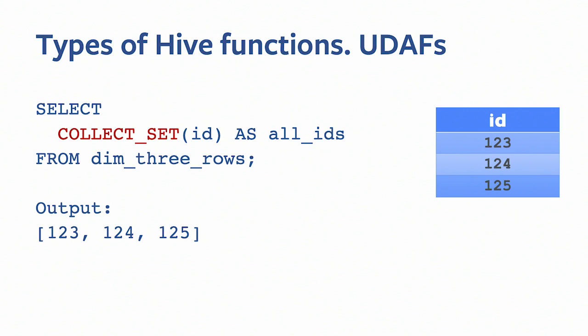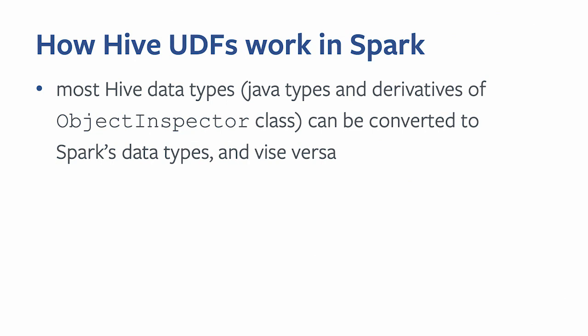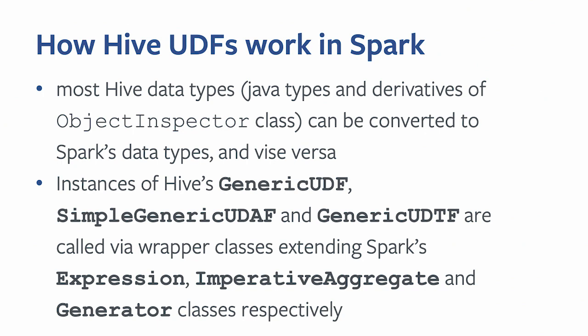How do Hive UDFs work in Spark? Most Hive data types, including Java types and derivatives of the object inspector class, can be converted to Spark's internal data types and vice versa. In Hive, when writing custom UDFs, we usually extend three major classes: Generic UDF, Simple Generic UDAF, and Generic UDTF. Spark calls these via wrapper classes extending Spark's expression, imperative aggregate, and generator — with very similar semantics to Hive.